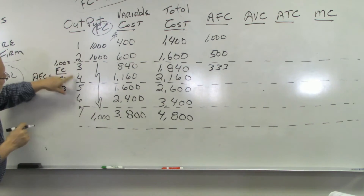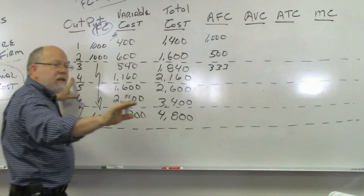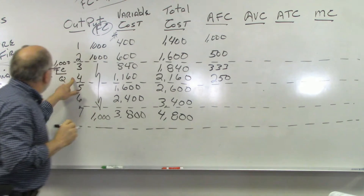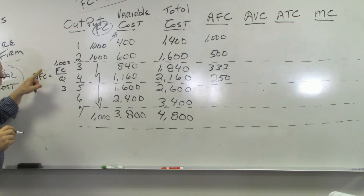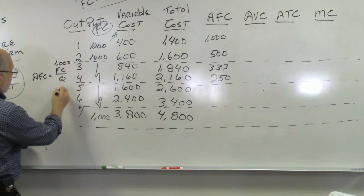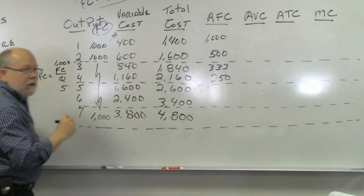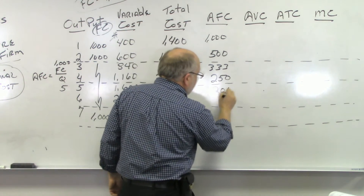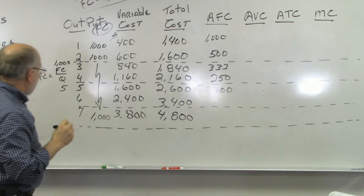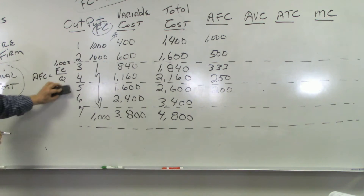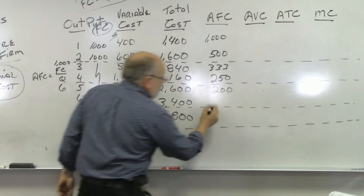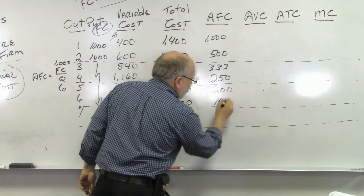If we take $1,000 divided by 4, that gives us $250. Then $1,000 divided by 5 gives us $200. And $1,000 divided by 6 — that's not intuitively obvious — we'll round to approximately $167.